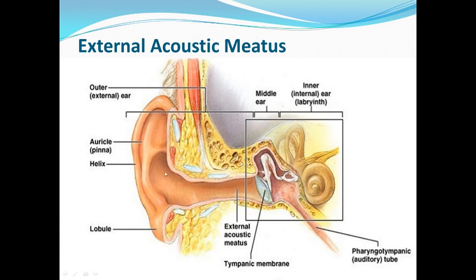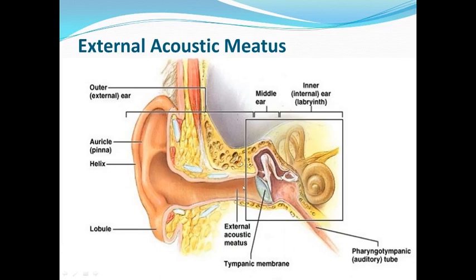If you see the canal in cross-section, you will find that the canal is generally oval in shape. The greatest diameter is at the lateral end, and also antero-posteriorly at the medial end. The bony part is the narrower part. The narrowest point, which lies just 5 millimeters away from the tympanic membrane, is known as the isthmus of the external acoustic meatus.